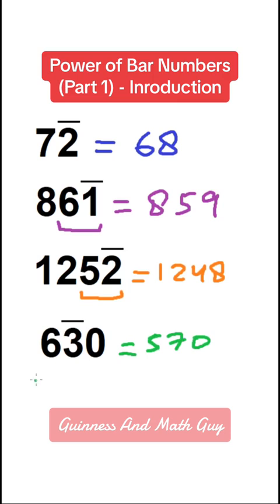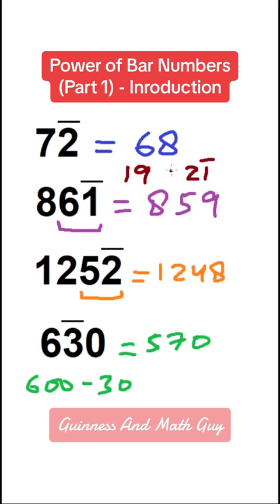Why? Because 6 bar 3 0 is actually 600 minus 30, which is 570. Now, why do we use bar numbers? There are many benefits. The first benefit is we can choose how we write numbers — 19 or 2 bar 1 are exactly the same. This way we avoid using big digits like 6, 7, 8, and 9 in our calculations. This was part 1 — follow for part 2 where we will build on this concept.